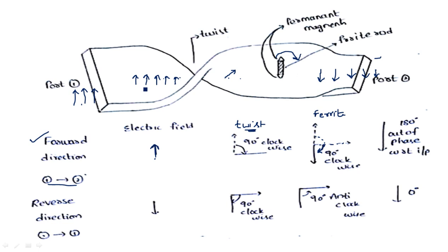Now coming to the backward direction: take the same signal obtained at port 2 — that is a downward direction signal, which is 0 degrees phase shift from our reference. Let us see what phase shift occurs when the input is applied at port 2. When this signal first touches the ferrite magnetic rod — in the reverse direction, the ferrite magnetic rod gives a 90 degrees phase shift in the anti-clockwise direction.